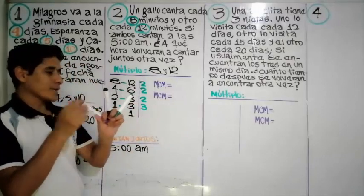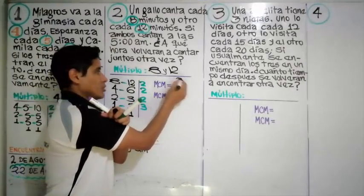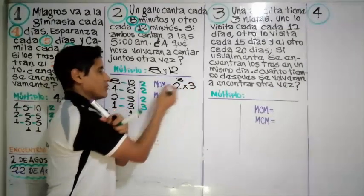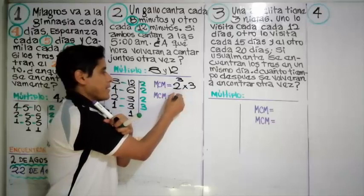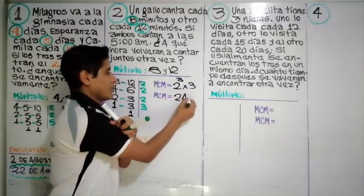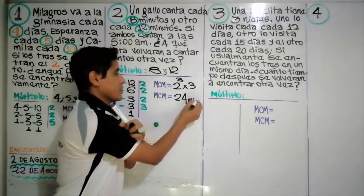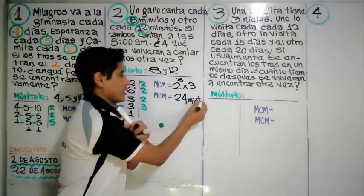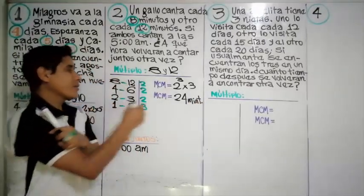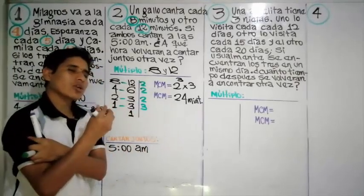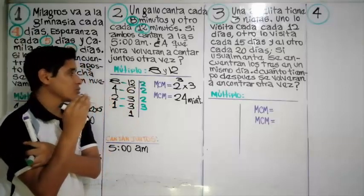En otras palabras, dos al cubo por tres. Dos al cubo es ocho, ocho por tres es veinticuatro. Veinticuatro minutos. Cada veinticuatro minutos esos dos gallos van a cantar juntos.